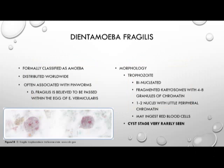Next we have Dientamoeba fragilis, which was formally classified as an amoeba and is important to distinguish from Entamoeba histolytica. It is distributed worldwide and is often associated with pinworm infection, and it is believed that Dientamoeba fragilis is passed within the egg of Enterobius vermicularis. The trophozoite is binucleated with fragmented karyosomes with four to eight granules of chromatin, and it has one to two nuclei with little peripheral chromatin. It may also have ingested red blood cells, as seen with Entamoeba histolytica.